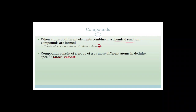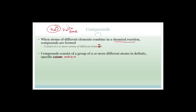Compounds consist of a group of two or more different atoms in definite specific ratios. For example, water is always made with two hydrogens and one oxygen. If we changed that ratio to H2O2 — two hydrogens for every two oxygens — we're actually changing the substance. That substance is called hydrogen peroxide, which is fatal to us. If we had to drink concentrated hydrogen peroxide, we would die, whereas water is life-sustaining on Earth.